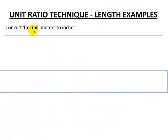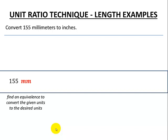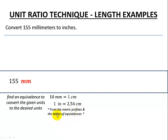One more length example: converting 155 millimeters to inches — from metric to imperial. Start with the given measurement in units: 155 millimeters. Look for equivalences to convert to the desired units. This time we need two equivalences: from the metric prefix table, 10 millimeters equals one centimeter, and from our table of equivalences, one inch is defined as 2.54 centimeters. So we can go from millimeters to centimeters and then from centimeters to inches.